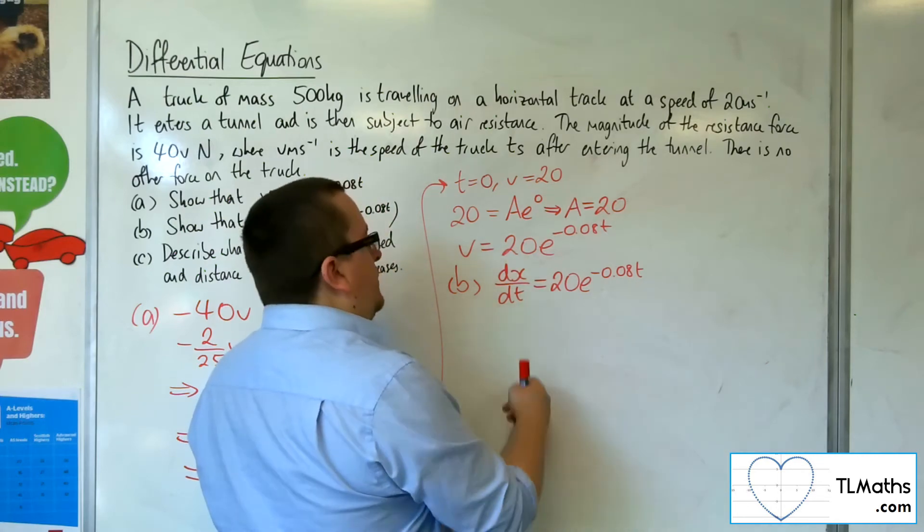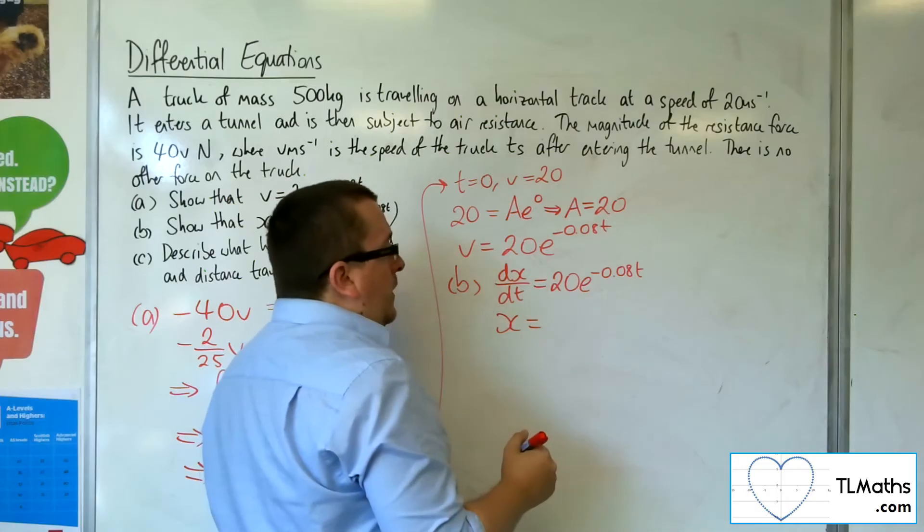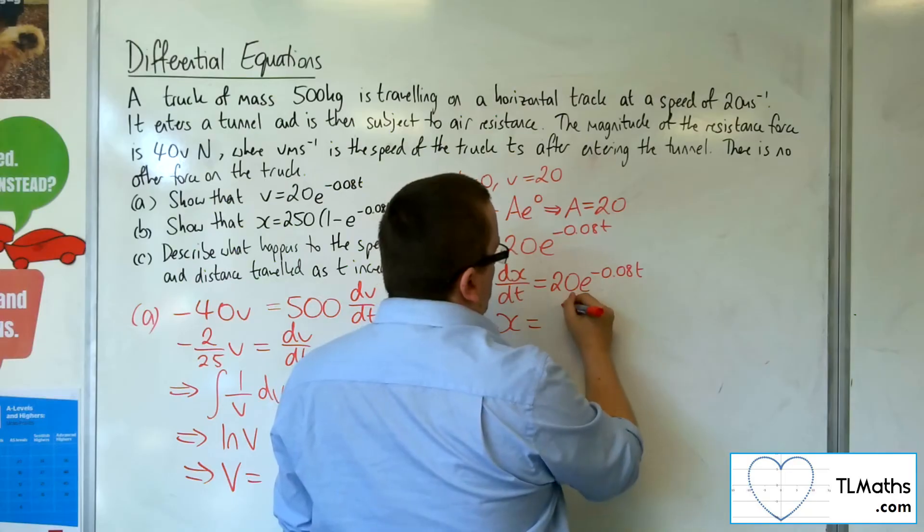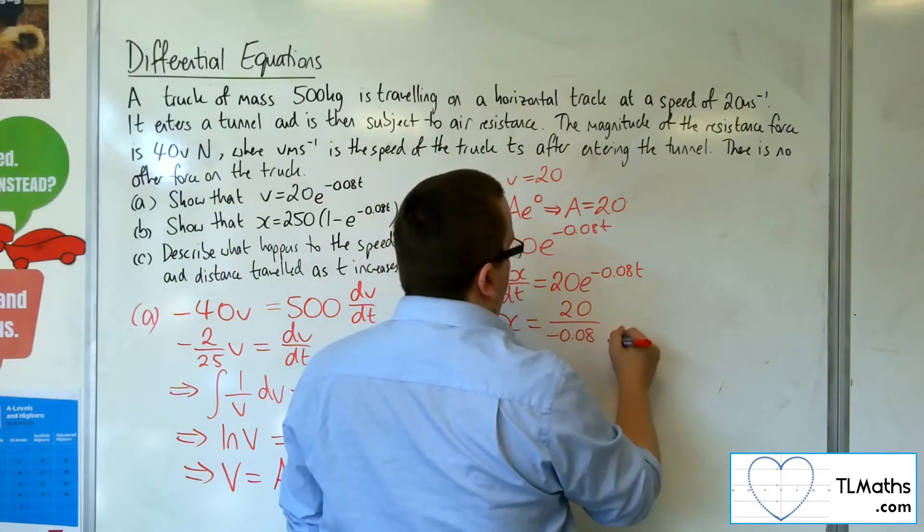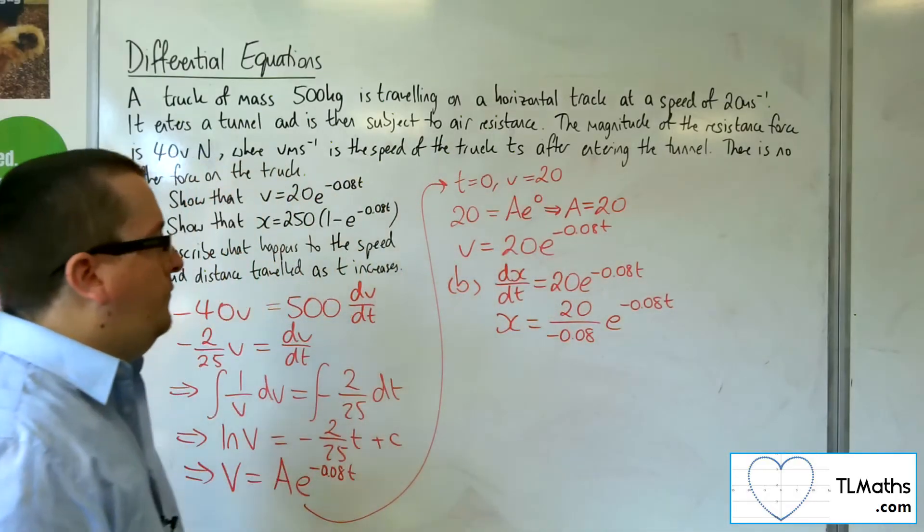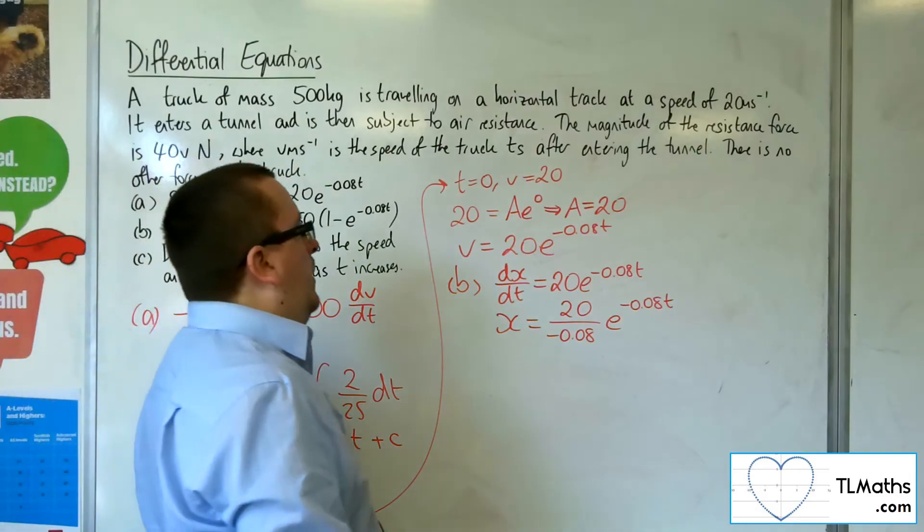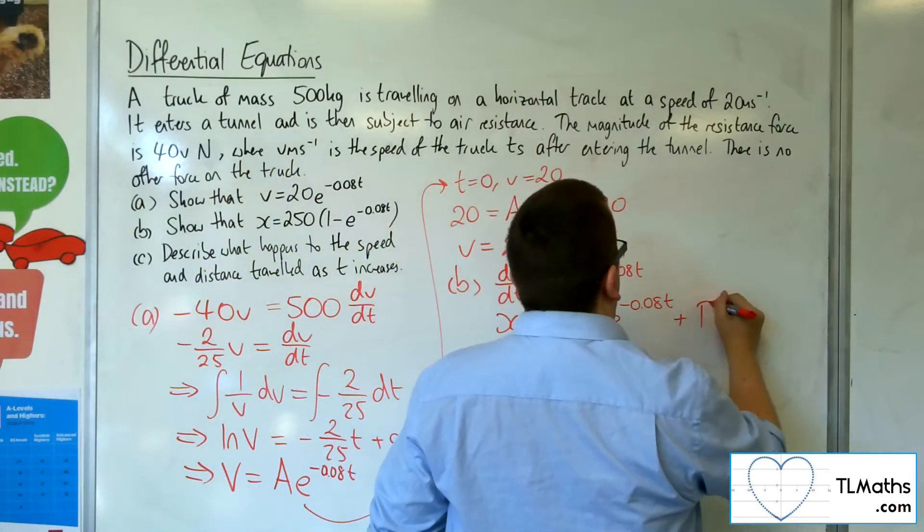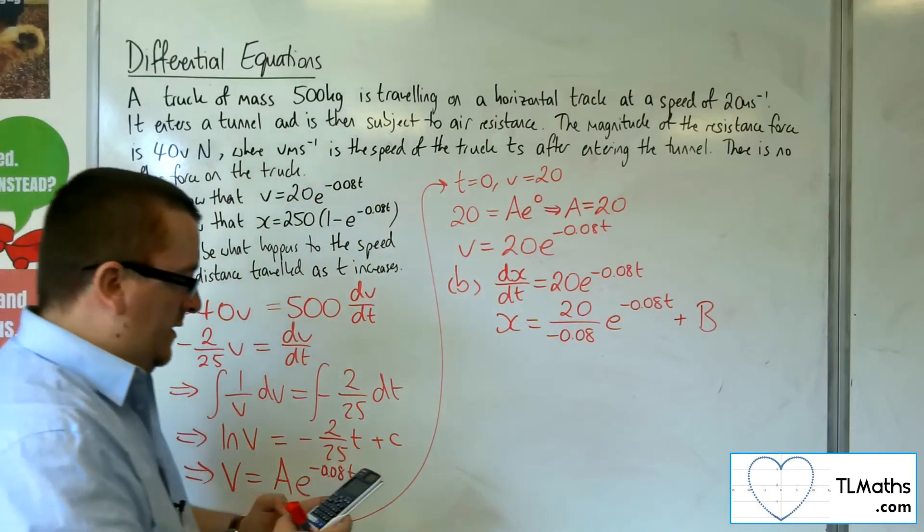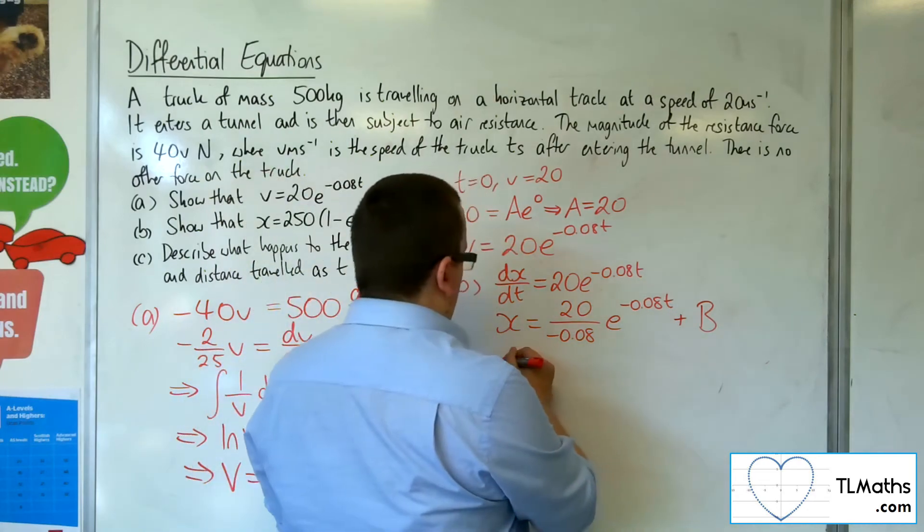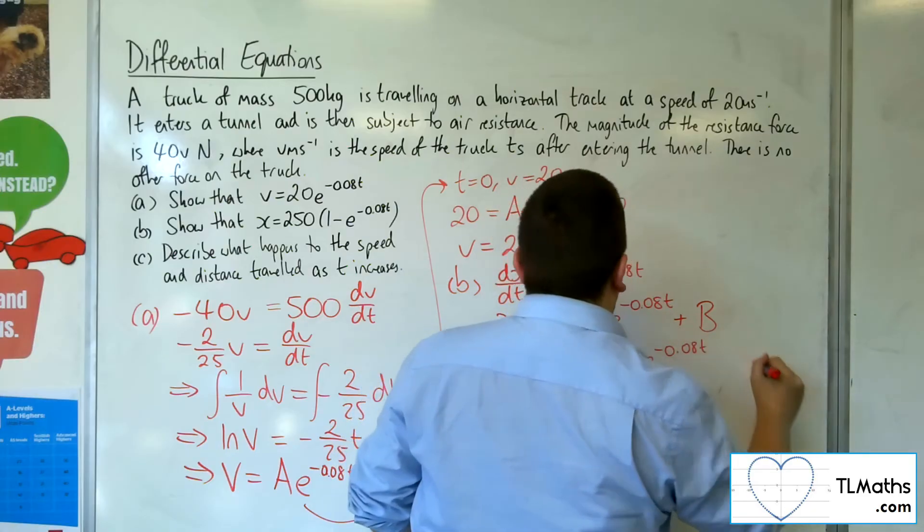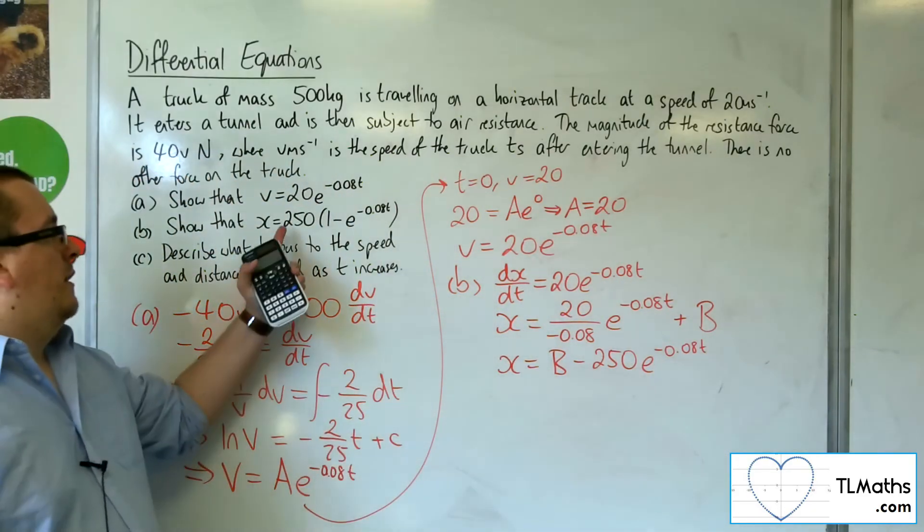So I'm going to get X equals, now I've got to divide by the minus 0.08, so 20 over minus 0.08 e to the minus 0.08T plus some constant of integration, let's call it B. Now 20 divided by minus 0.08 is minus 250. So X is equal to B take 250 e to the minus 0.08T. So it's looking reasonable.